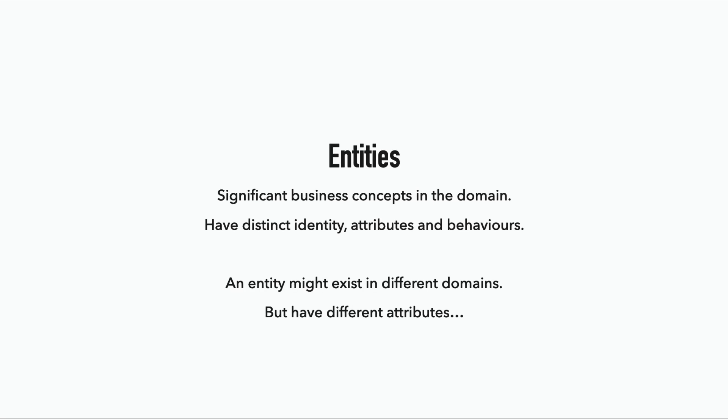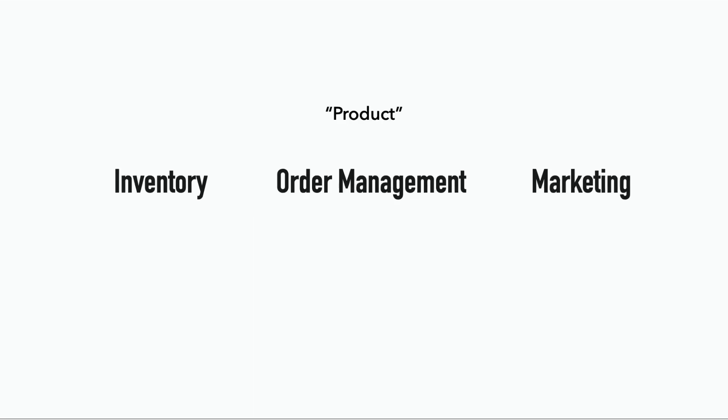It's important to note that an entity might exist in different domains, but it can have very different attributes and behaviors. Take a product, for example — it might appear in the inventory management domain, the order management domain, as well as the marketing domain. It will always have a product ID and name.